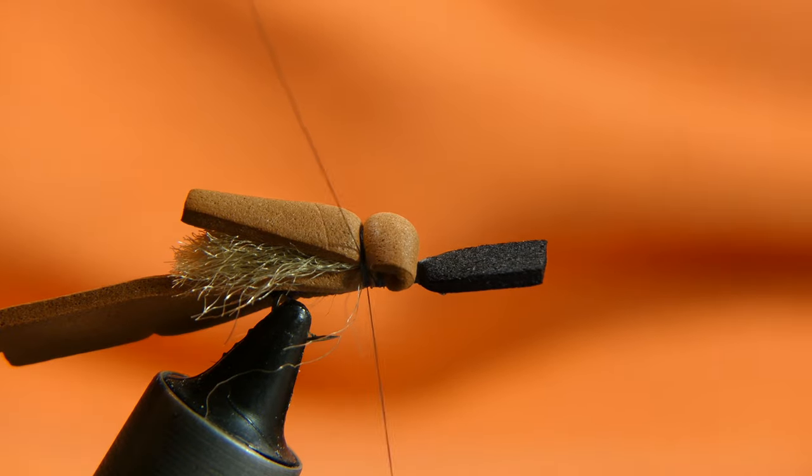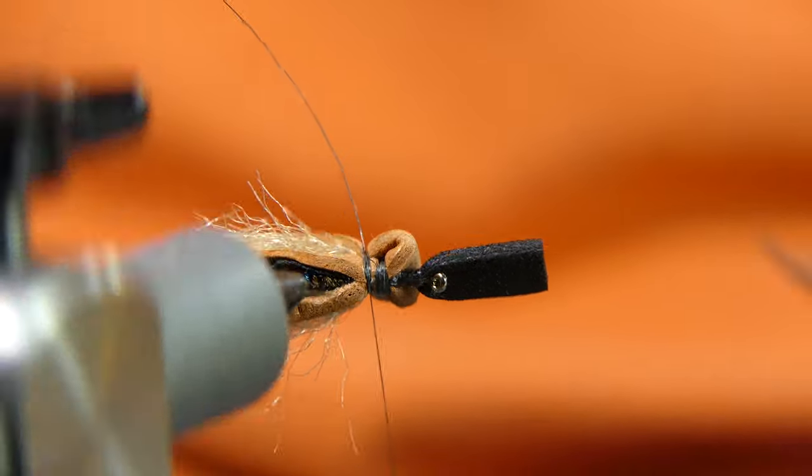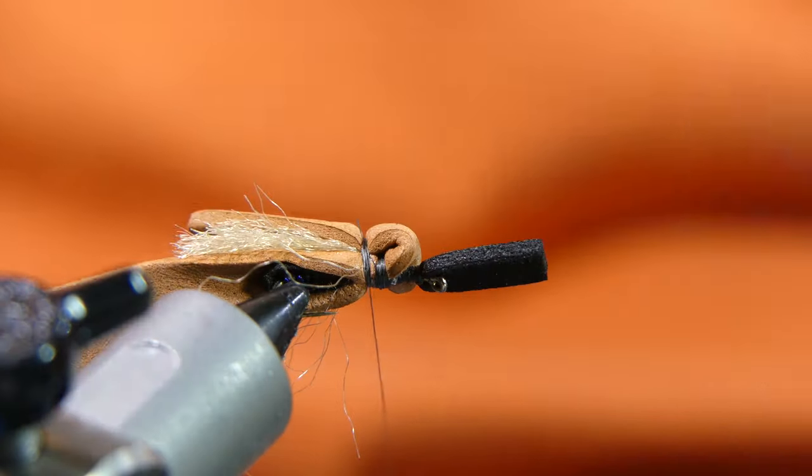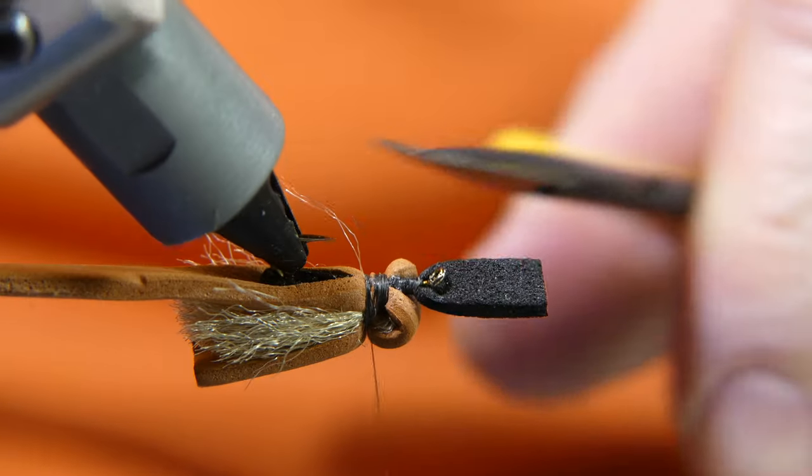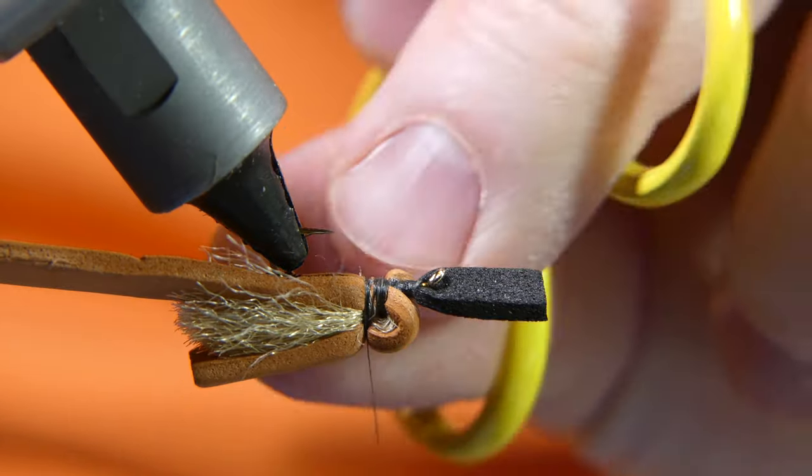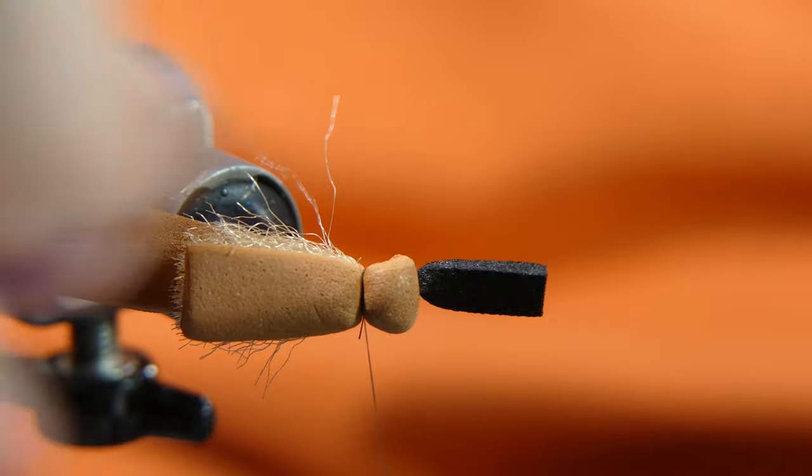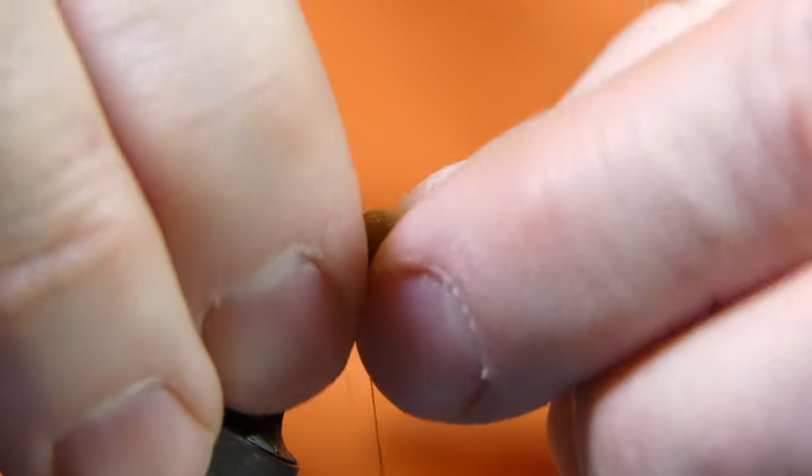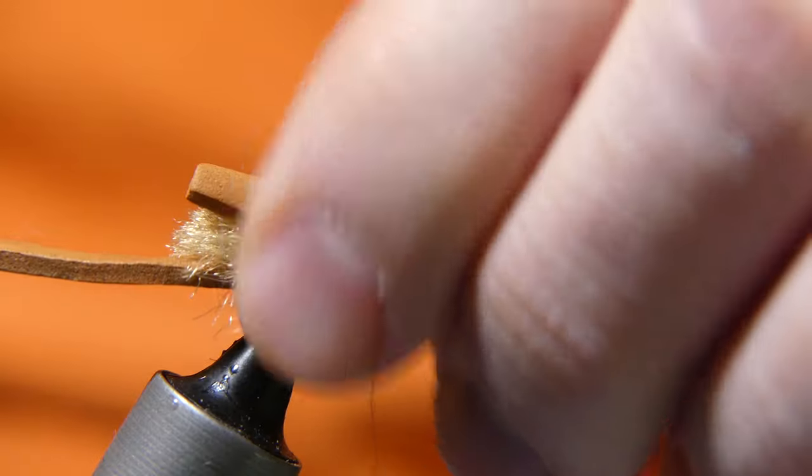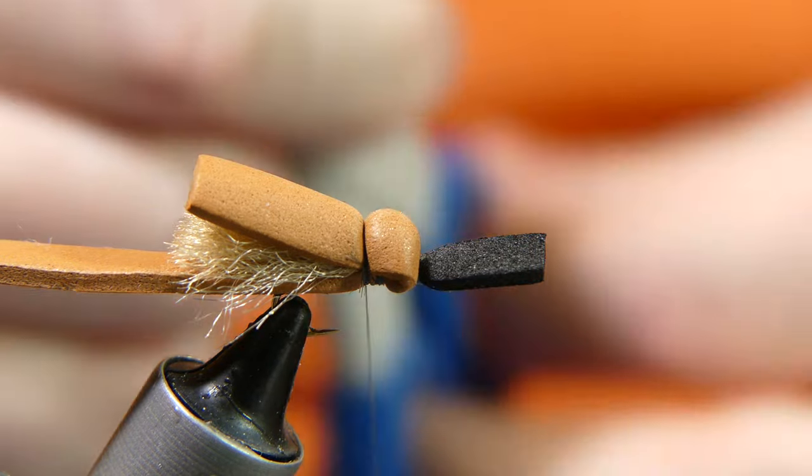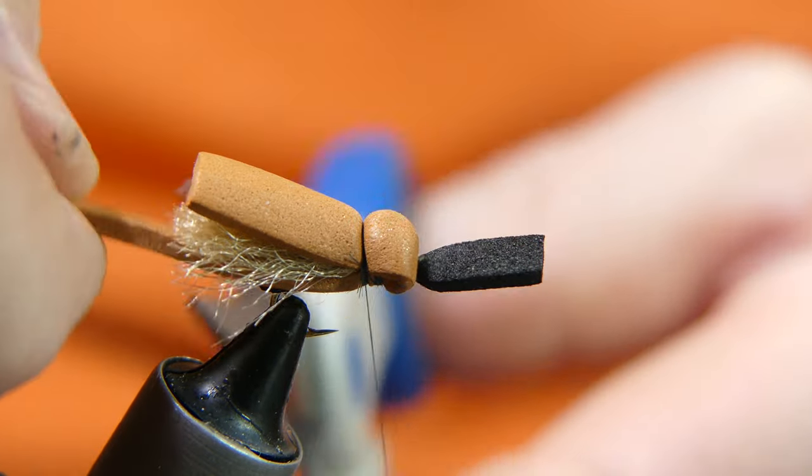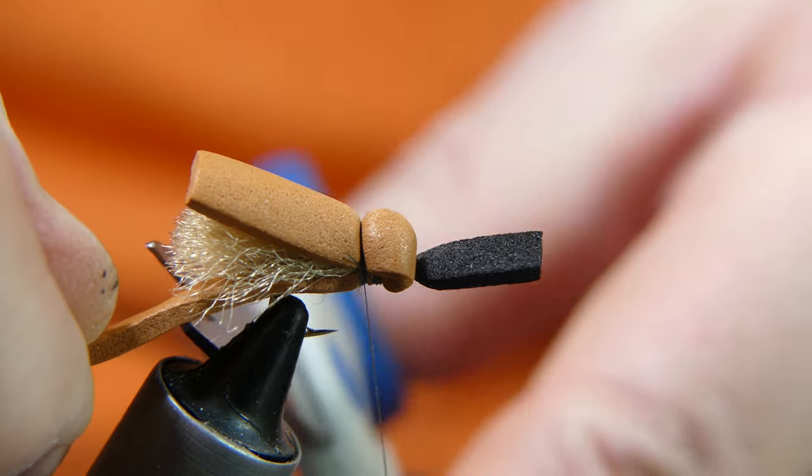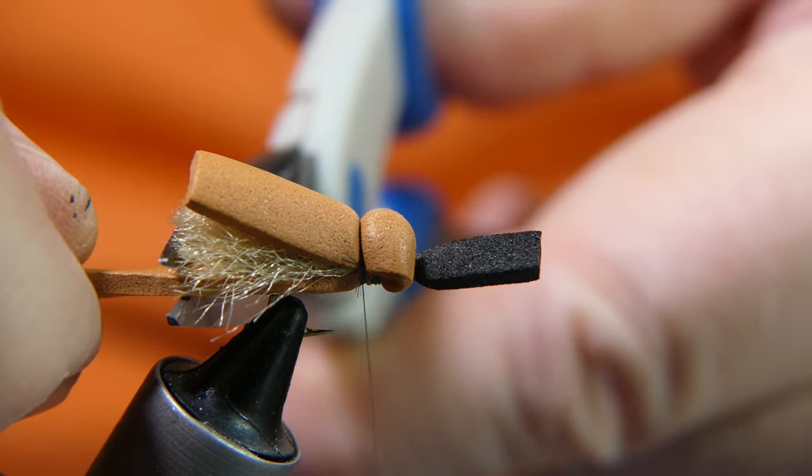Just like that. Make sure everything is still centered there. Cut away your bottom piece of brown foam just past your black foam.